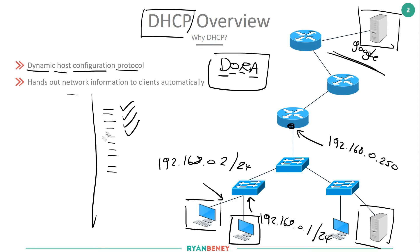DHCP is very popular and used in most networks. The only alternative is statically setting each IP address, which is not viable on a large network. Think about your home — you connect to your Wi-Fi and instantly get internet connectivity because your home device does DHCP and gives you an IP address automatically.